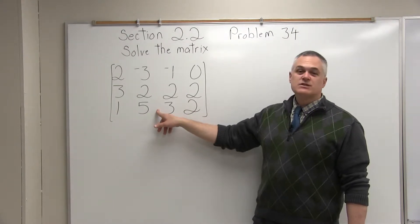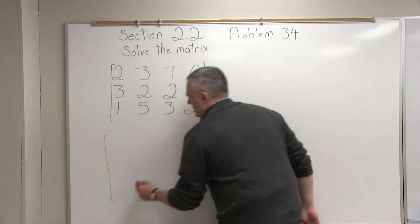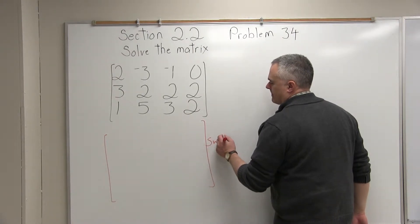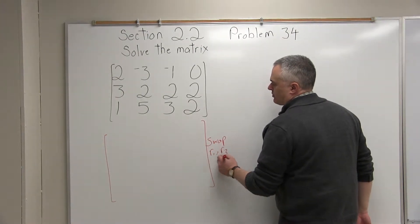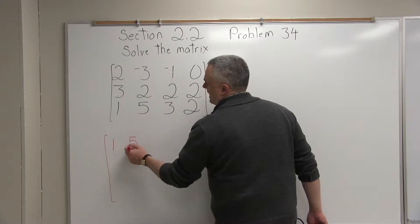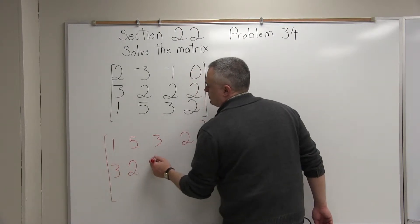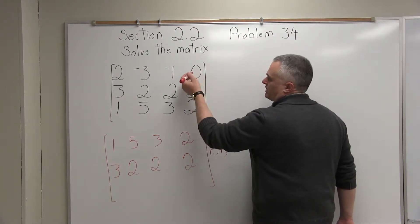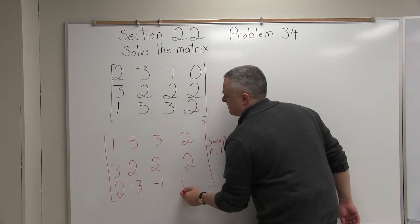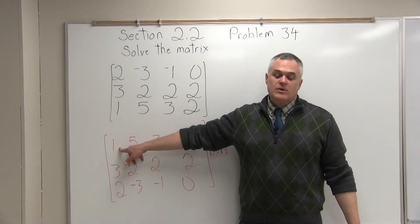So I'll swap row 1 and row 3. I'll set up my next matrix and note: swap row 1, row 3. The new row 1 is the old row 3: 1, 5, 3, 2. The middle row stays: 3, 2, 2, 2. And what was row 1 becomes the new row 3: 2, negative 3, negative 1, 0. Step 1 is complete — I wanted a 1 in the upper left, and I now have a 1 in the upper left.